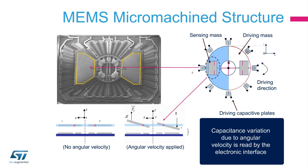The cross-sections at the bottom show, on the left, wing behavior when no angular rate is applied and, on the right, when an external angular rate is applied. The wing displacement is read by detecting the capacitive variation between the bottom plate and the wing itself. With this structure, we consider that ST has reached the state-of-the-art for this type of product.